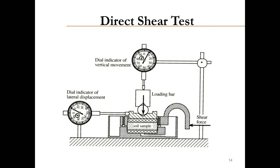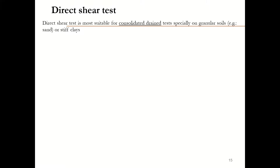This is a schematic diagram of the direct shear test apparatus. The test will be conducted in two phases. First, we will apply the normal load to consolidate the soil sample. When two consecutive dial gauge readings are the same, we can assume that the soil has become consolidated. Then we will apply the shear force to the soil sample and measure the lateral displacement through a dial indicator. A direct shear test can be conducted on both disturbed and undisturbed samples. If the load is applied slowly, the soil sample will get enough time to dissipate its pore water pressure and become drained. The direct shear test is most suitable for consolidated drained testing, especially on granular soils or stiff clays.